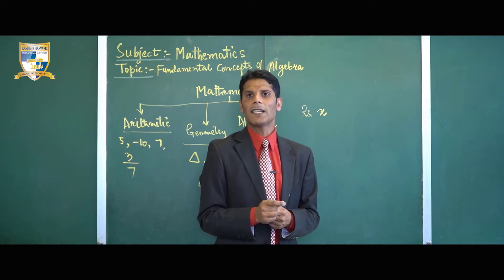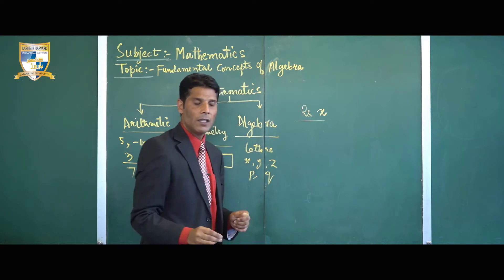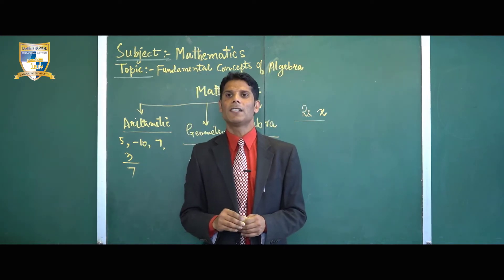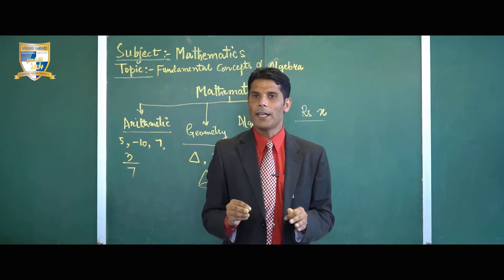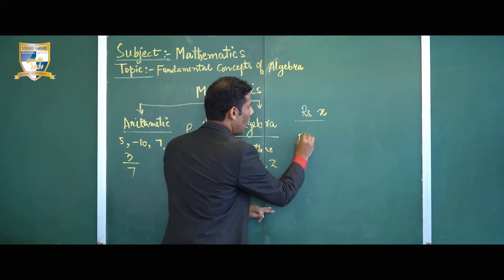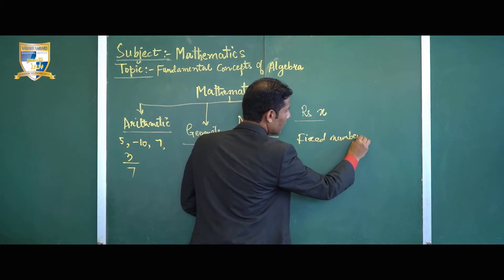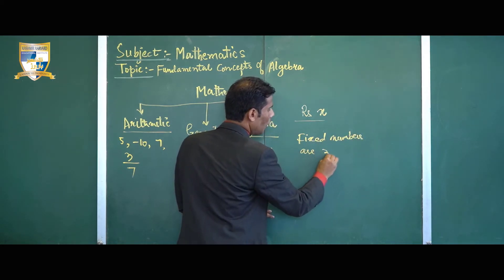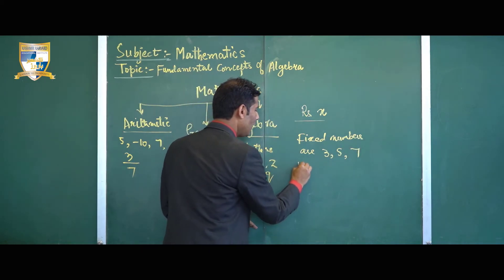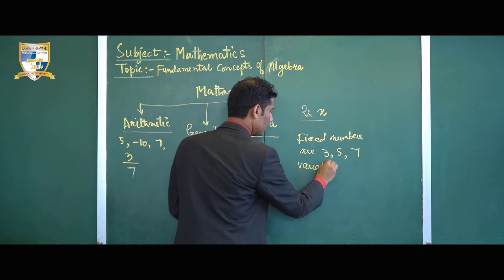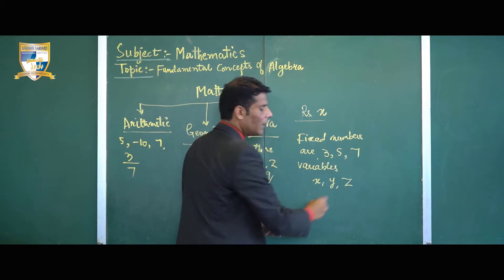In algebra we use two kinds of symbols: fixed numbers and variables. Fixed numbers are like 3, 5, 7 — these are the fixed numbers. Variables are x, y, z, because these get changed from question to question.